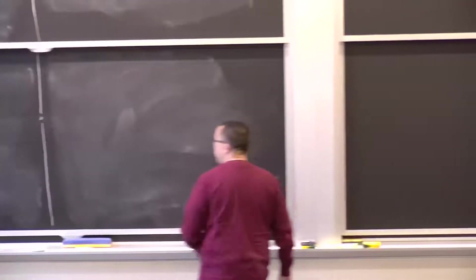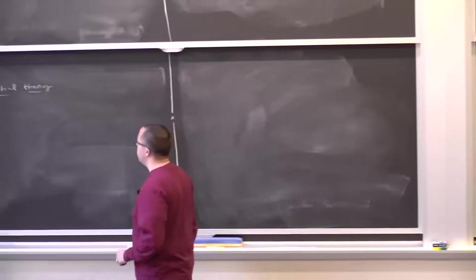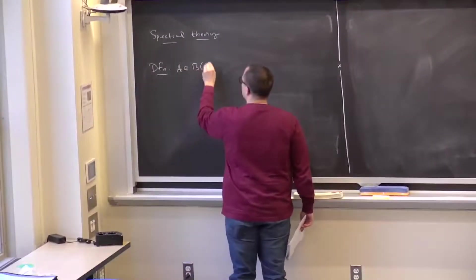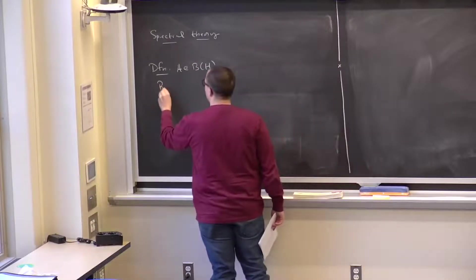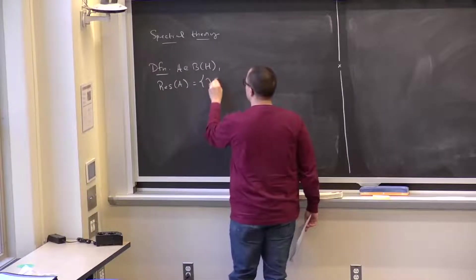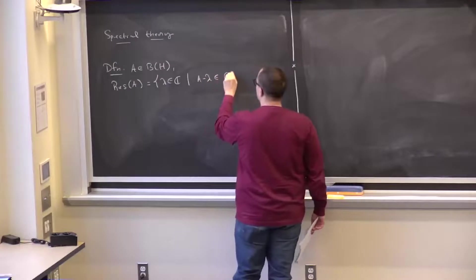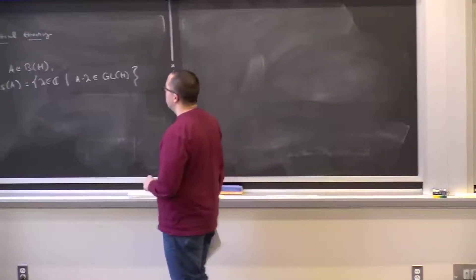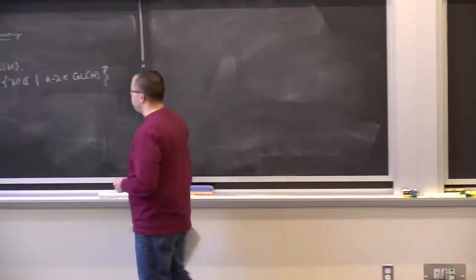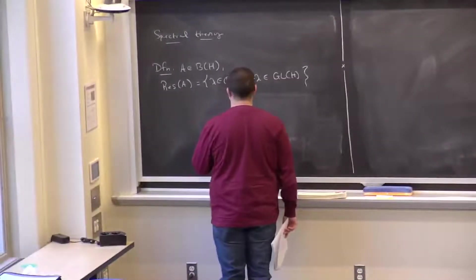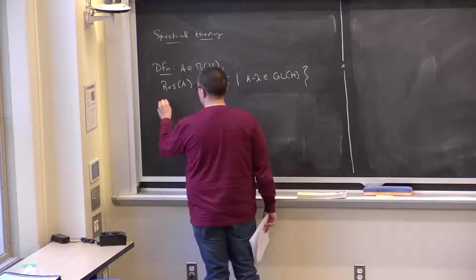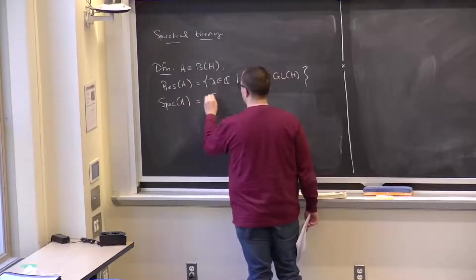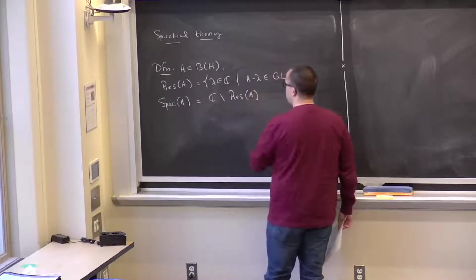Let's continue our discussion about spectral theory for self-adjoint compact operators. Recall the spectrum of a bounded operator, which was supposed to be a generalization of the eigenvalues of a matrix. We defined the resolvent set of A to be those complex numbers λ such that A minus λ is an invertible bounded linear operator, meaning it is bijective—and by the open mapping theorem, the inverse is also continuous. The spectrum of A is the complement of the resolvent set.